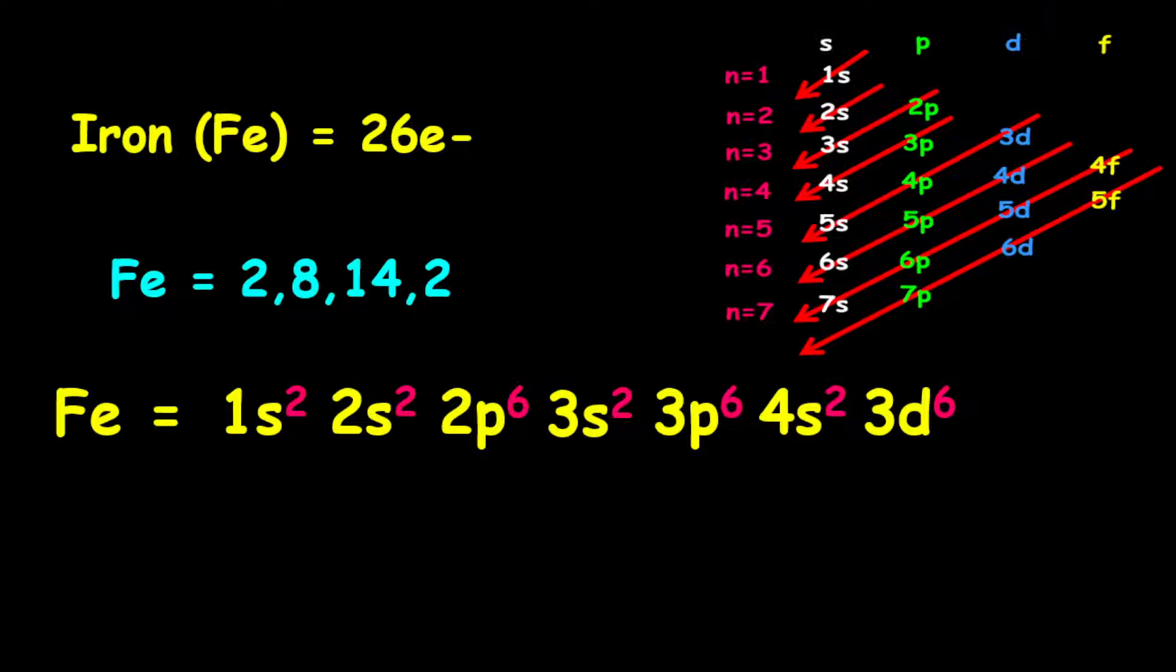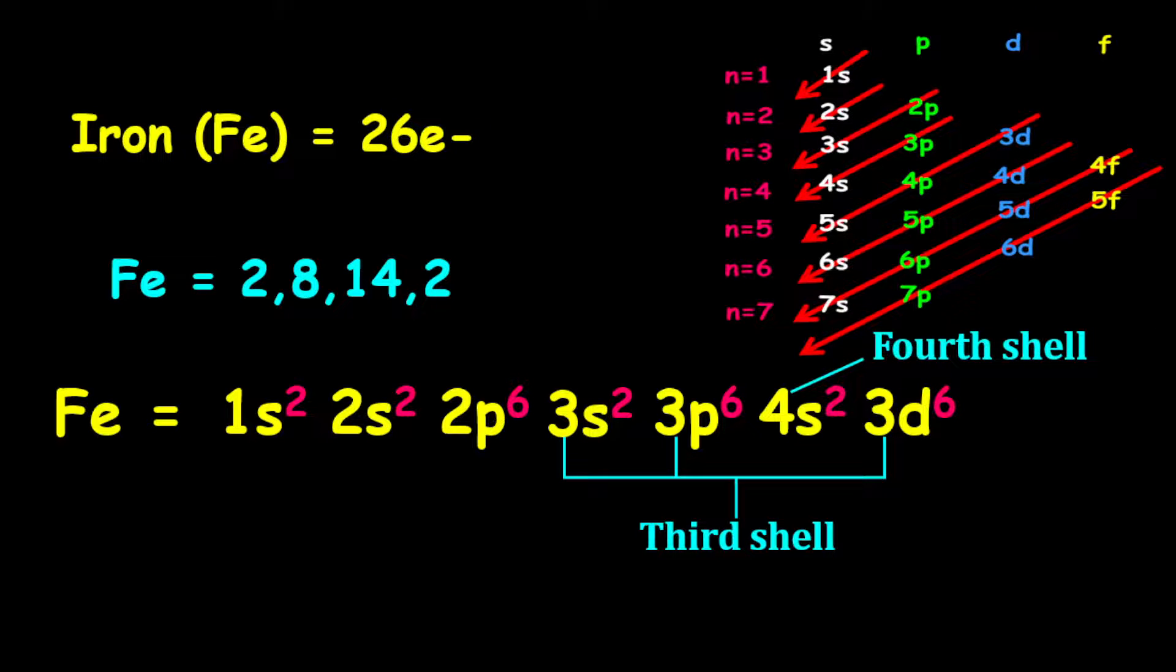we have a total of 14 electrons. Therefore, the 3s, 3p, and 3d orbitals all account for the 14 electrons on the third shell. The 4s orbital accounts for the two electrons on the fourth shell.